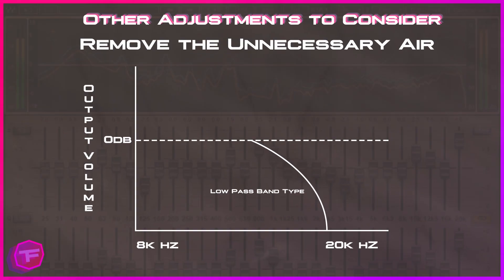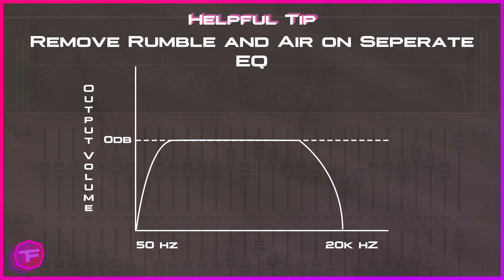Another useful adjustment is removing unnecessary air sounds. Use a low pass band type set at around 13.25k Hz to cut off all audio from that point forward. This prevents unnecessary air sounds from coming in — especially with condenser microphones, which are extremely sensitive and pick up a lot of that airy type of sound. If you're getting a humming or similar noise, this low pass cut might be exactly what you need.